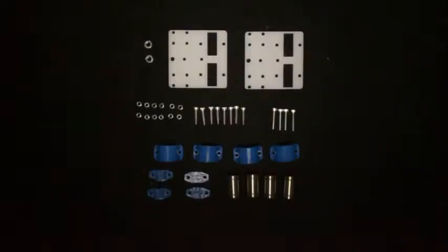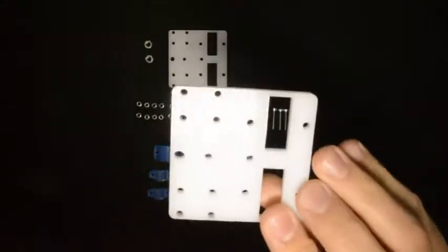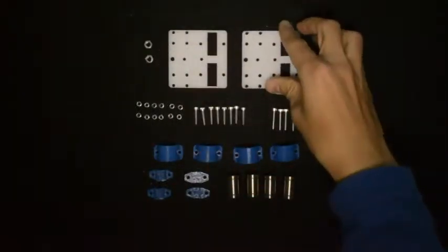In this video we will assemble the Z carriage. What you'll need for this first step is the two components that look like this. There are in total three of them in your kit.